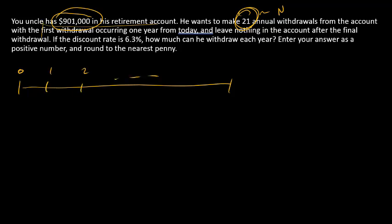We want the first withdrawal to happen one year from today, so this is going to be set up as an ordinary annuity. I'm going to call this amount, we'll just call it PMT.